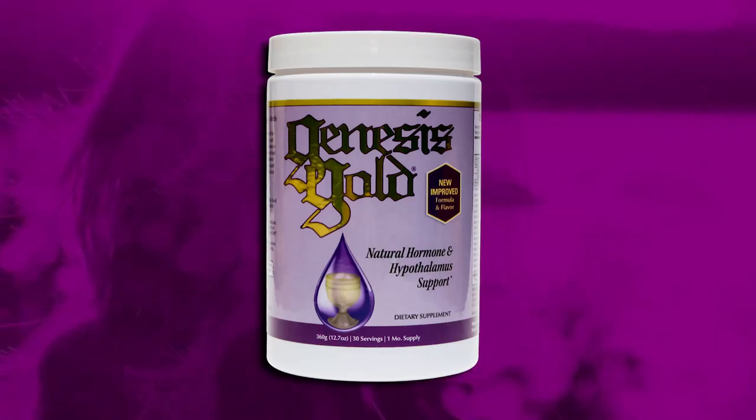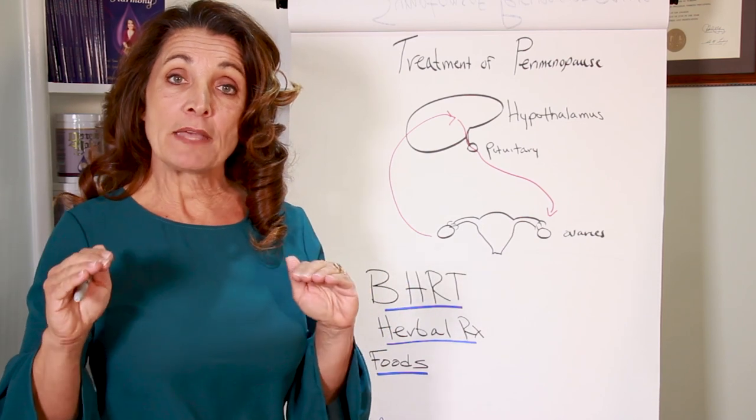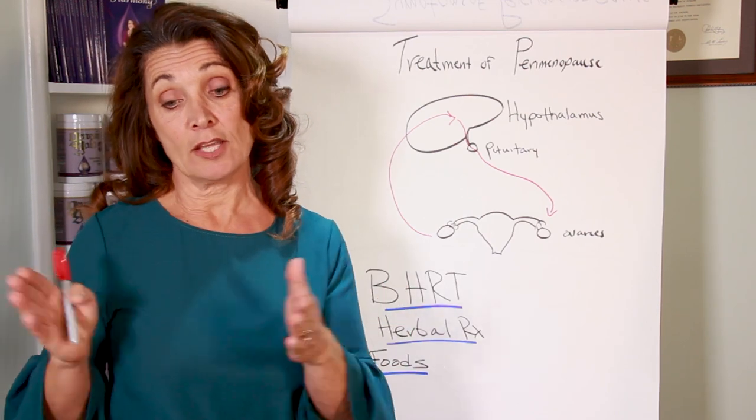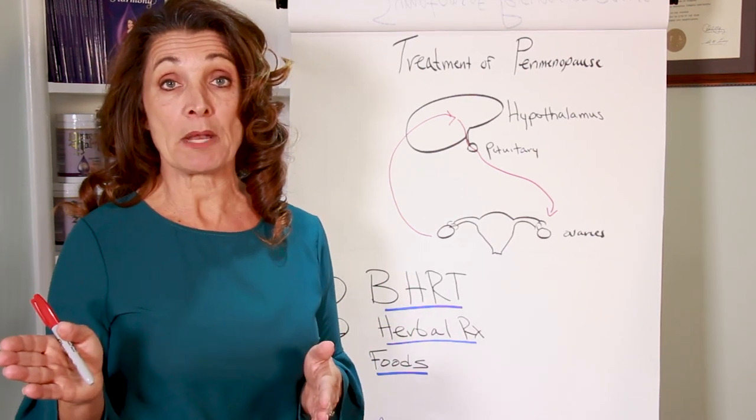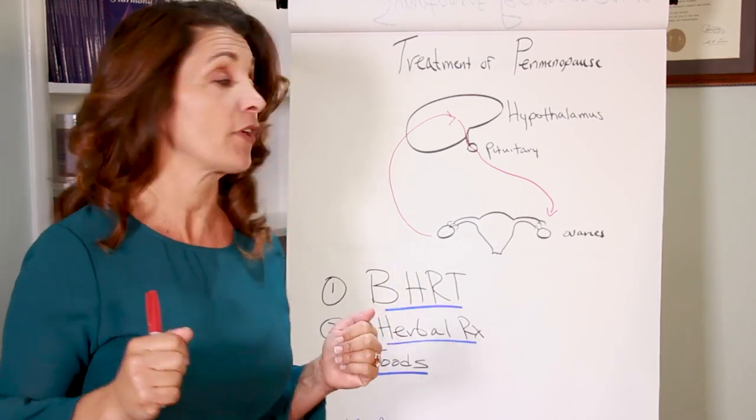All of the herbs in Genesis Gold will help to balance out the hypothalamus and actually make the transition into perimenopause much more smooth. It may actually extend your time between starting perimenopause and actually going through the full menopause by regulating your cycles.